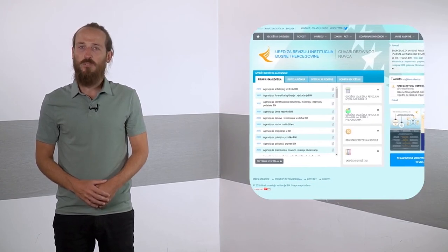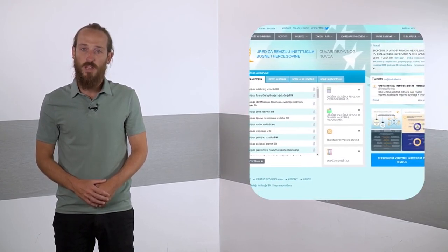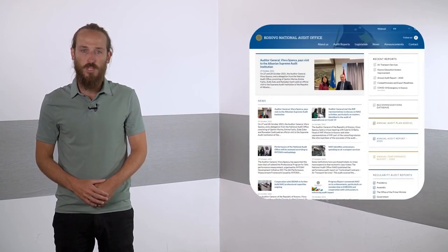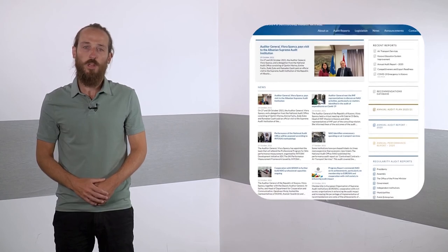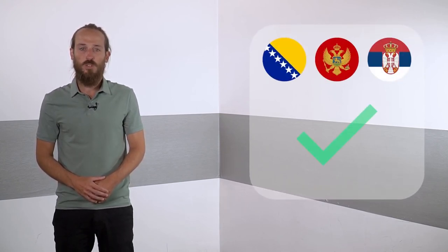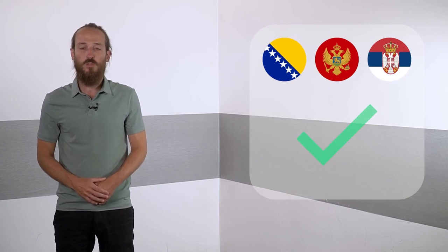Finally, supreme audit institutions have considerably strengthened their public communication. In half of the region, they implement communication strategies, and most supreme audit institutions are diversifying tools and products they use to inform the public on audit work. Importantly, citizen-friendly audit summaries are more common, and the supreme audit institutions in Bosnia and Herzegovina, Montenegro, and Serbia publish simplified versions of majority, if not all, audit reports.